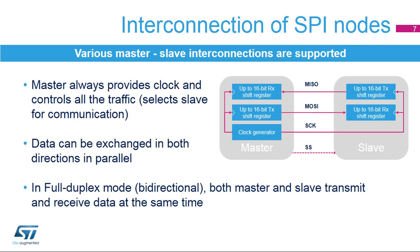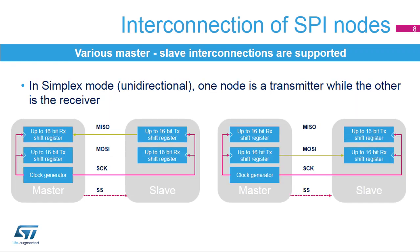In full duplex mode, both data lines are used and synchronous data flows in both directions. In simplex mode, one node transmits data while the other receives the data — data only flows in one direction. Depending on the communication direction, only one data line is used. Unused SPI pins can be used for other purposes.